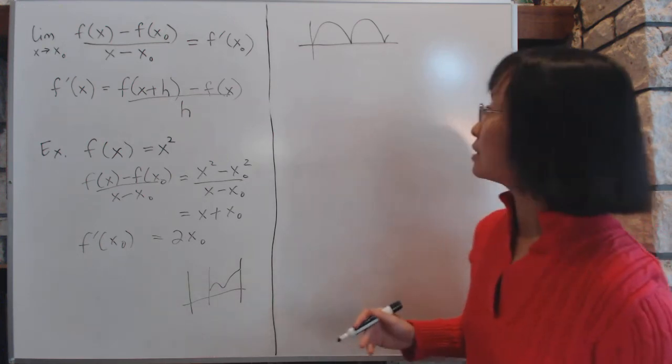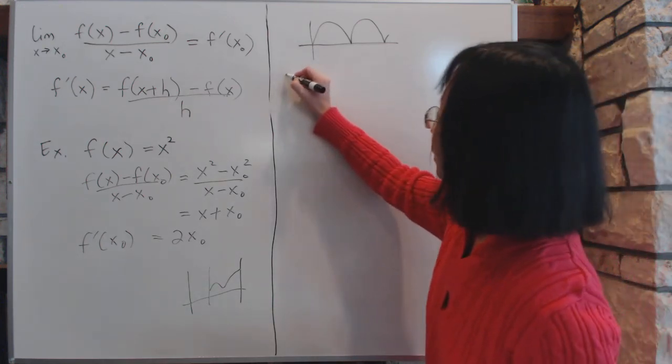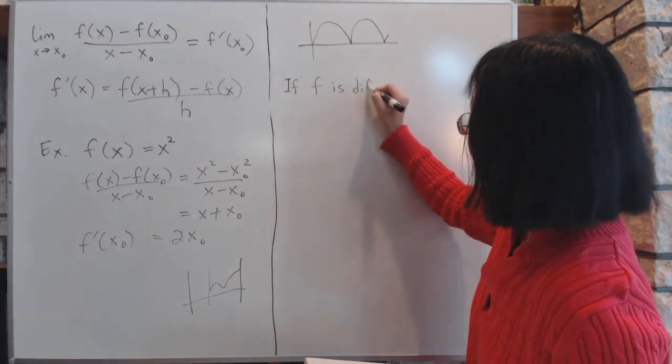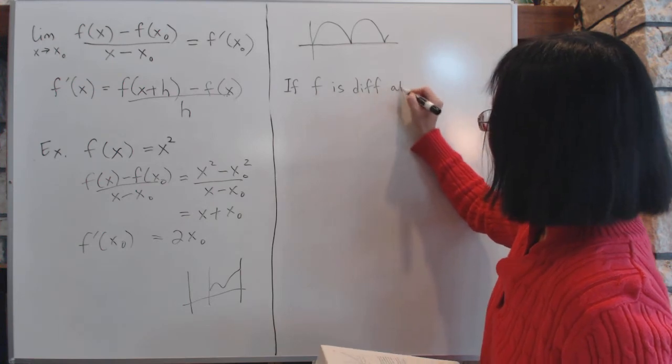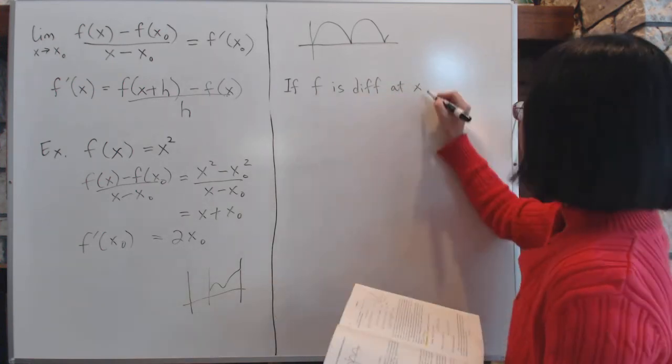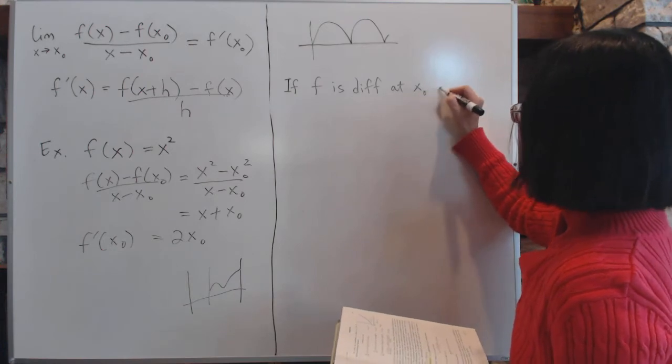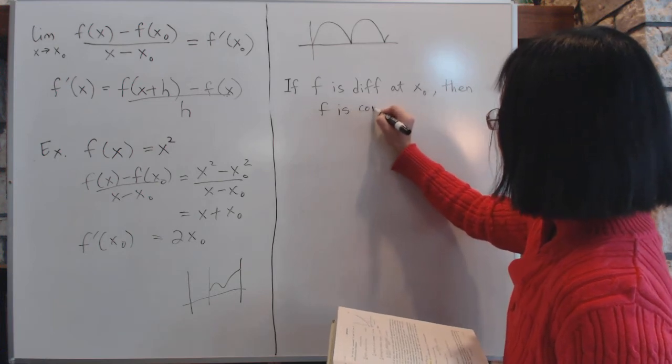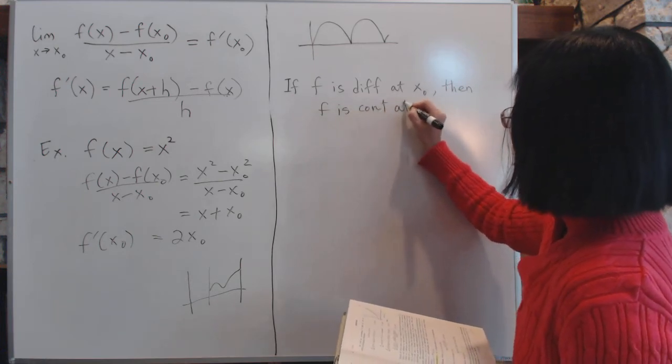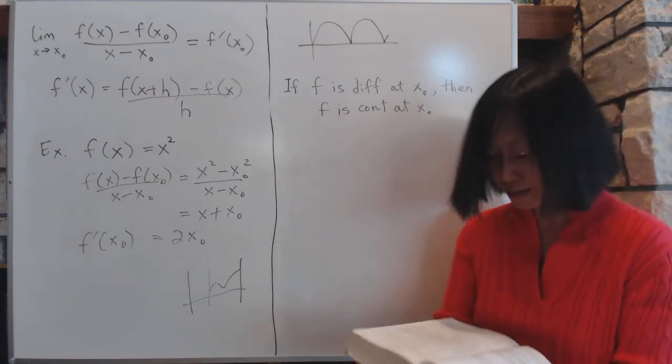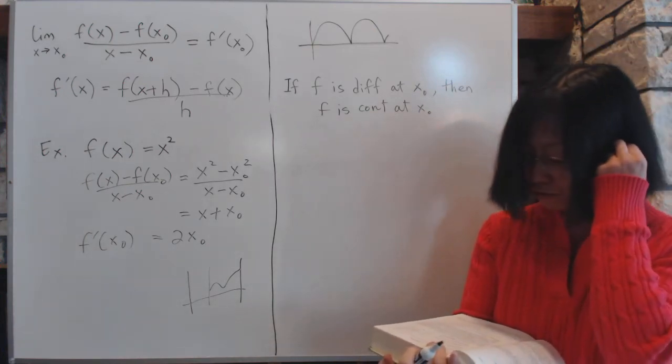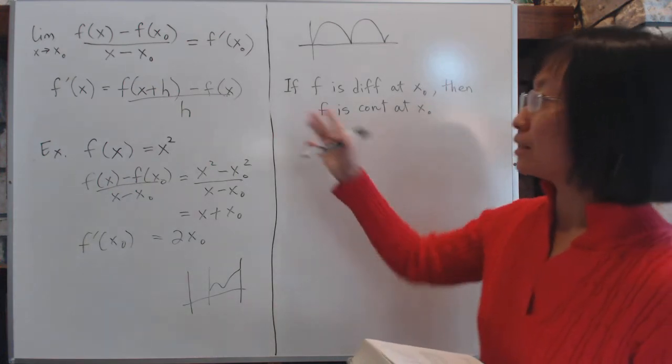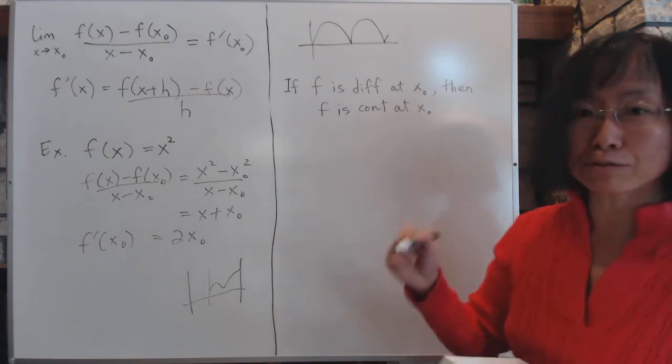Now, there is a theorem that says if f is differentiable at a certain point, then it is continuous at that point. The proof of this is actually an overkill proof because differentiability is a very strong condition, whereas continuity is a much weaker condition.